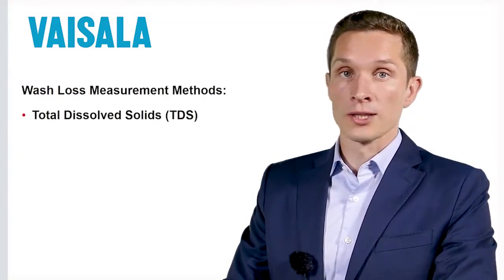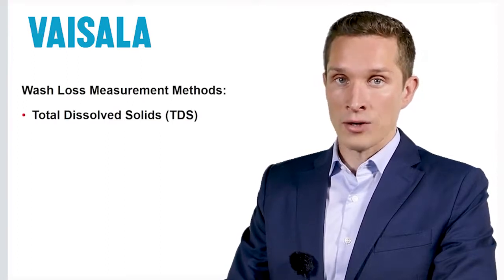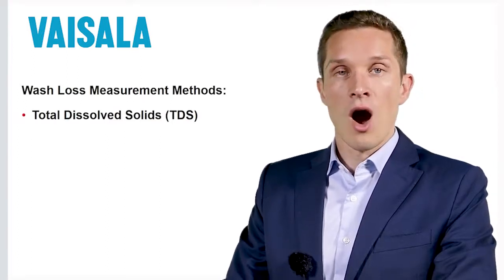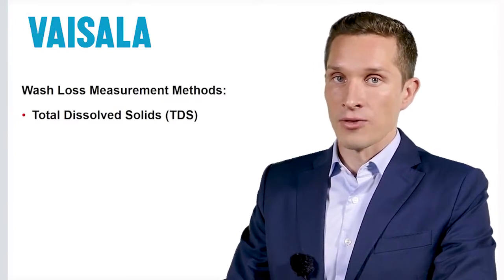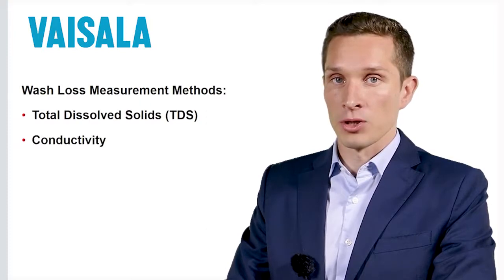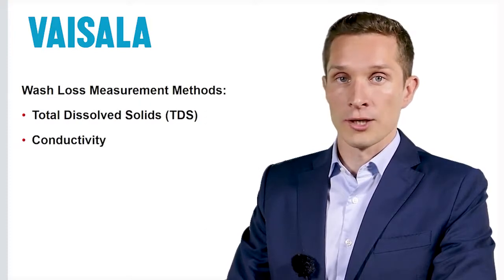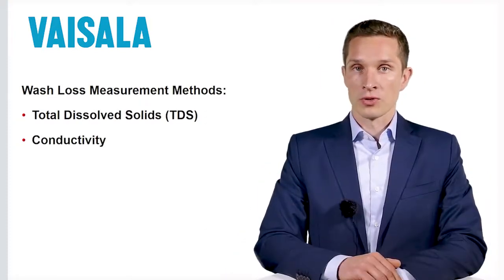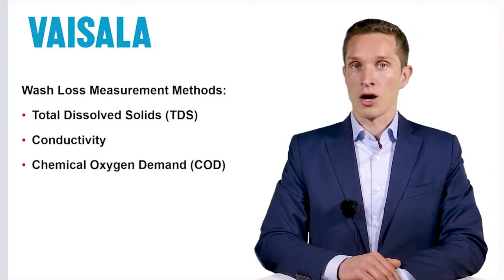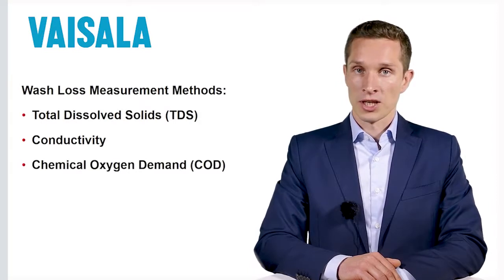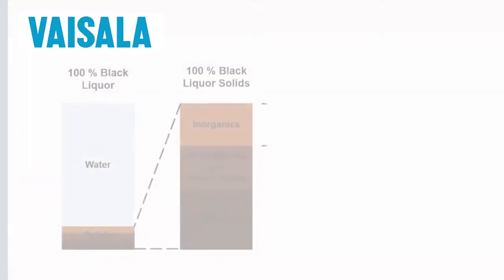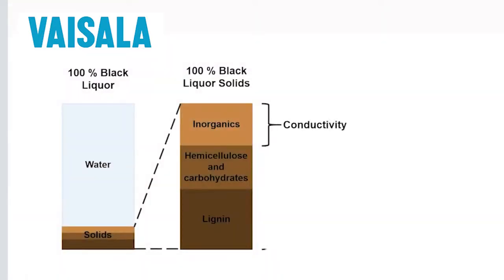Dissolved solids have always been used to measure wash loss and washing efficiency. However, it has not been possible to measure dissolved solids in-line, and therefore the inorganic changes by conductivity have been used as a real-time wash loss indication. Another common method to indicate wash loss has been chemical oxygen demand, or COD, as it correlates with bleaching chemical consumption. While conductivity measures the inorganic changes, this laboratory test gives indication on the organic fraction of the total solids.